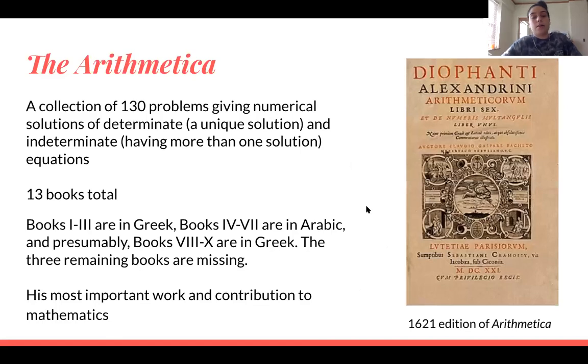Okay, the Arithmetica is Diophantus' most important work in contribution to mathematics. It was basically a collection of 130 problems, giving numerical solutions of determinant, meaning a unique solution and indeterminate, or having more than one solution equations. There were, in fact, 13 books total. Only six were thought to have survived.